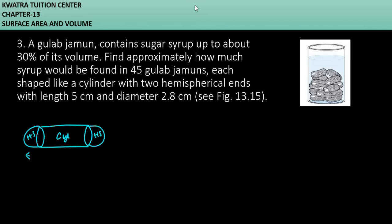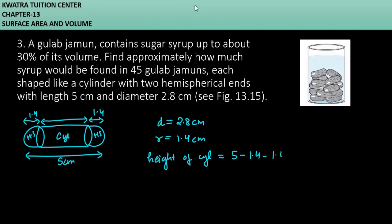Length mentioned already, which is 5 cm. Diameter is 2.8 cm. Radius will be 1.4 cm. Now what should we do? We have to find the height of the cylinder. This radius is 1.4 cm, this radius is 1.4 cm. So height of cylinder will be 5 minus 1.4 minus 1.4.